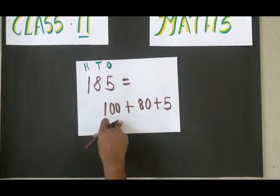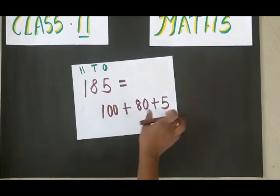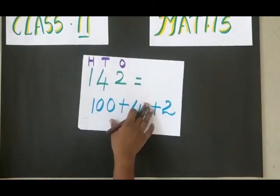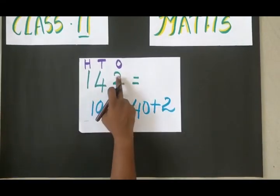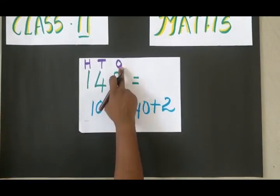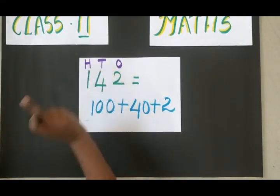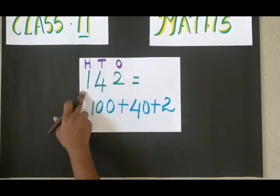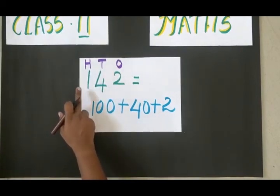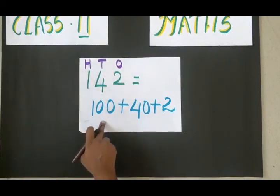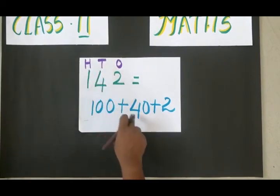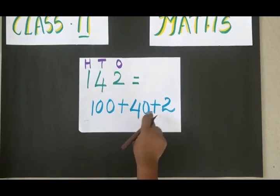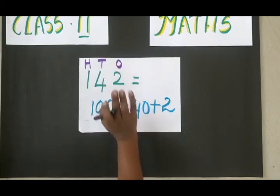Here I am writing one more example: one hundred and forty-two. First I should write the place value — ones, tens, hundreds. How many hundreds are there? One times 100. Four tens is forty, and two ones.